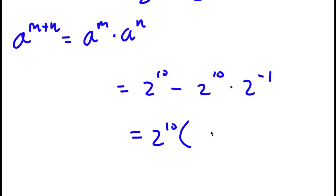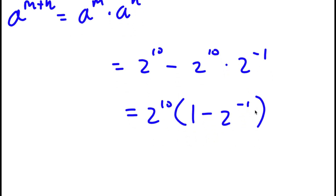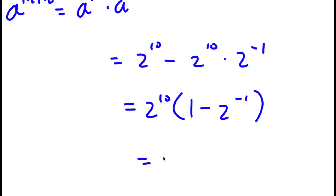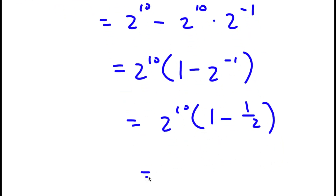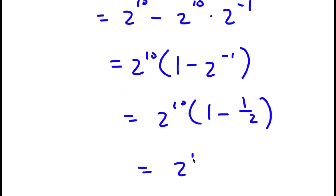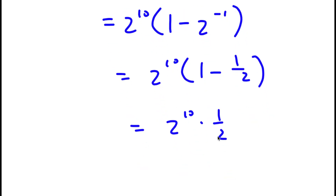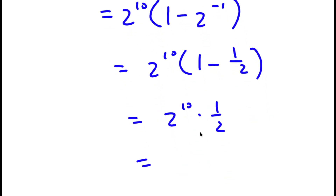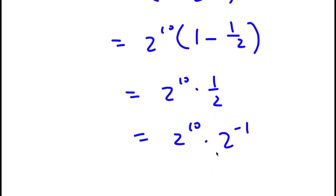If I factor out 2 to the power of 10, I get 2 to the power of 10 times 1 minus 2 to the power of negative 1. Now, 2 to the power of negative 1 is the same thing as 1 over 2. So I have 2 to the power of 10 times 1 minus 1 over 2, which equals 1 half. So I have 2 to the power of 10 times 1 half. Since 1 half is 2 to the power of negative 1, this gives 2 to the power of 10 times 2 to the power of negative 1, which equals 2 to the power of 9.